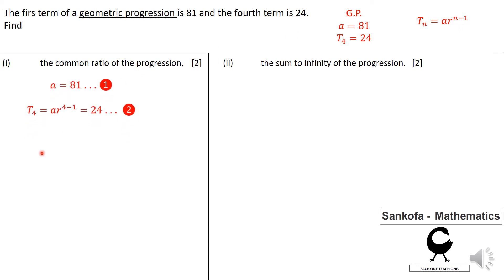We need to find the common ratio. First term A equals 81. The fourth term of the GP is AR raised to the power of 4 minus 1 equals 24. I'm going to substitute 81 in the second equation. That's going to give me a cube number, 8 over 27. I need to take cube root of both sides, so my common ratio is 2 over 3.